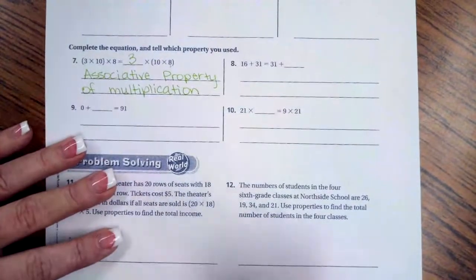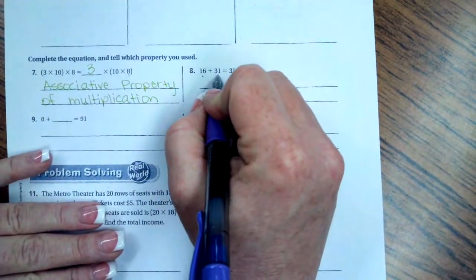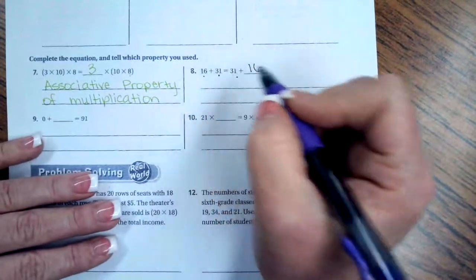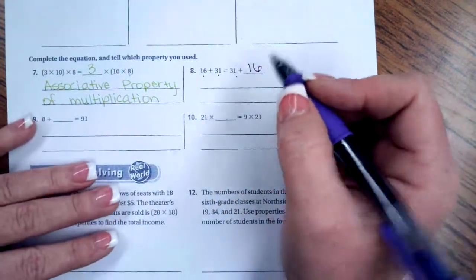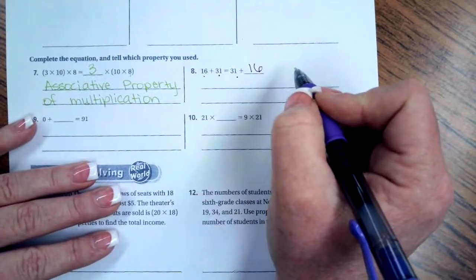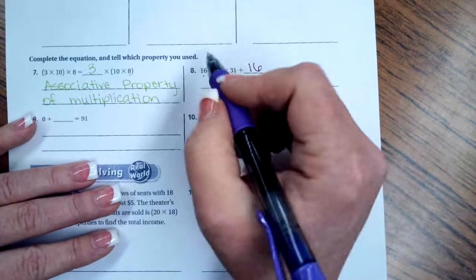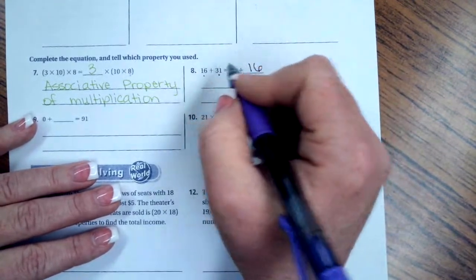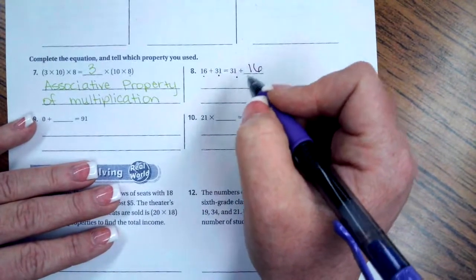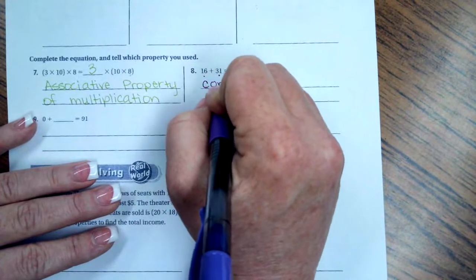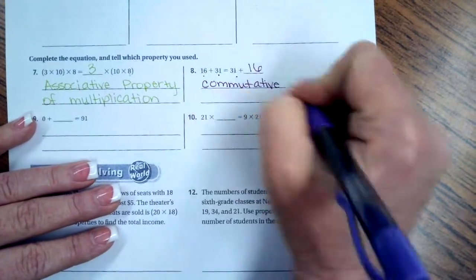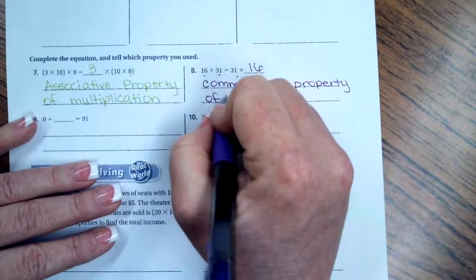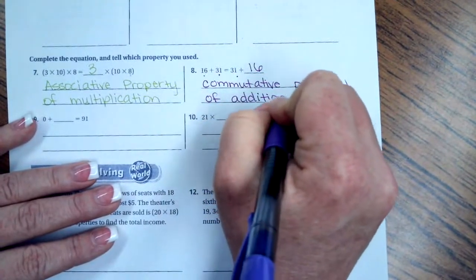So now I'm going to show you another property. So this one says 16 plus 31 equals 31 plus, well, 16 is the other number here. Now, when you commute to work, to school, whatever it means, that you leave one place and you go to another place. But they're the same places. So maybe you left home and went to school and then after school, you go from school and you go home. You've commuted both ways. Commuted is when you go somewhere else. So this is the commutative property. And the easy part is just looking at the sign. The sign is addition. So of addition.